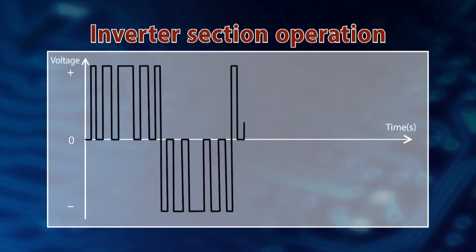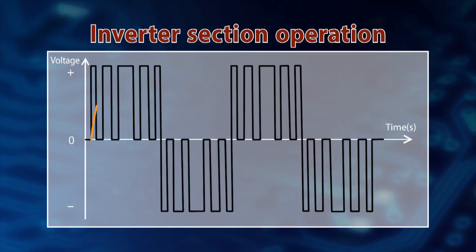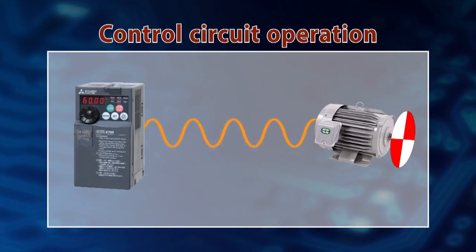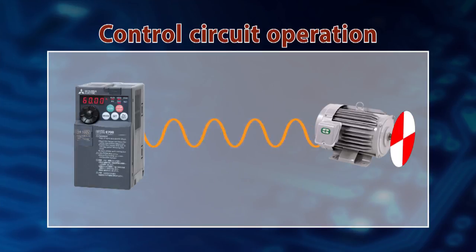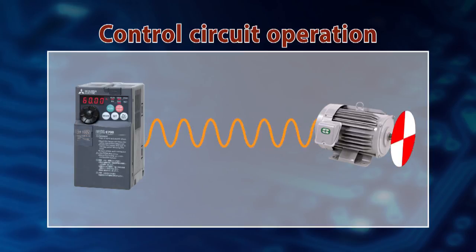Next, the inverter section converts the DC power supply to a pulse-like pseudo-alternating current. And the control circuit section changes the pulse frequency to control the motor rotational speed.